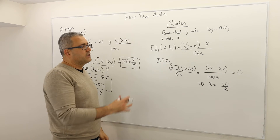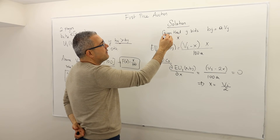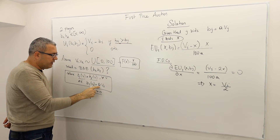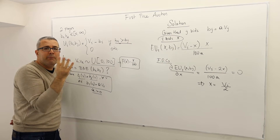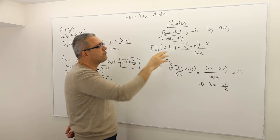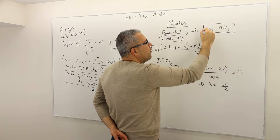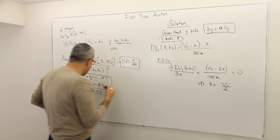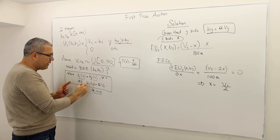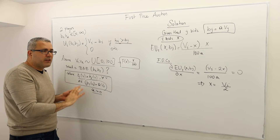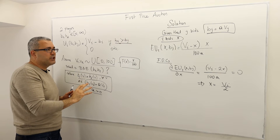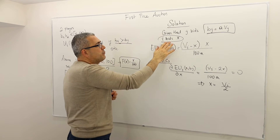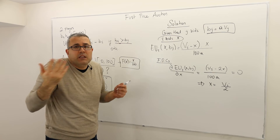Here's how we solve it. Suppose player I's bid is X — I don't know yet if it equals A times V_I, it's just some X. I fix the opponent's strategy. Since I'm looking for a Bayesian Nash equilibrium with linear strategies, I fix the opponent's bid as A times V_J. Player I may actually prefer to bid non-linearly, but I'm fixing the opponent at A times V_J.